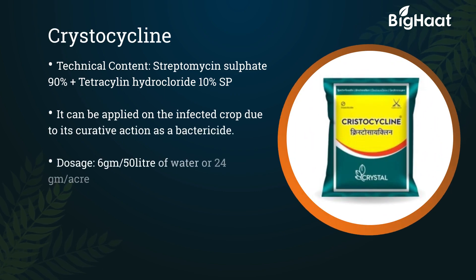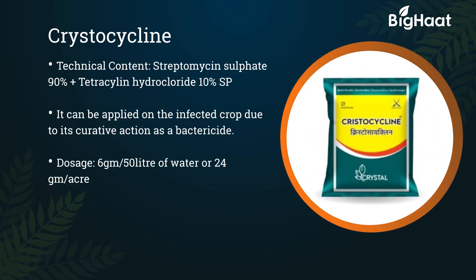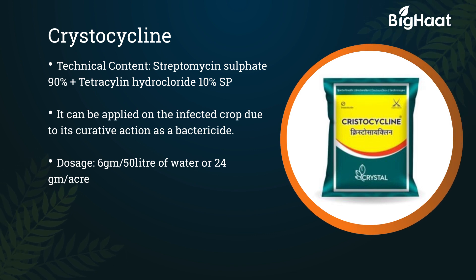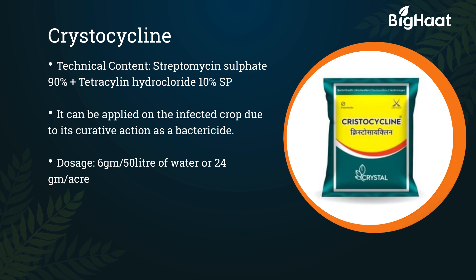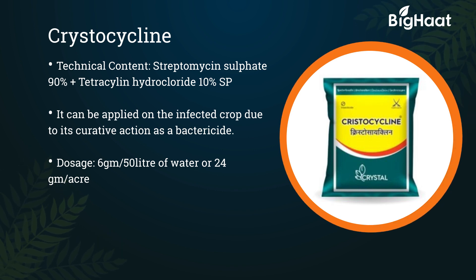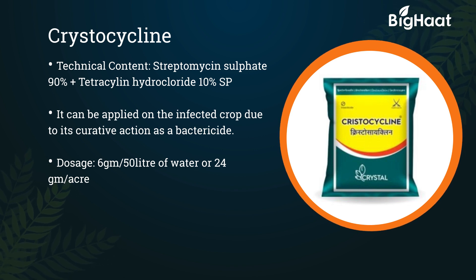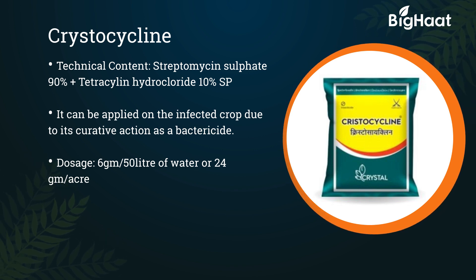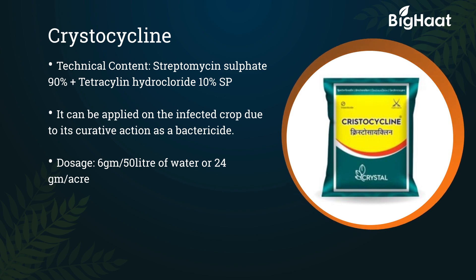Ristocycline: Its technical content is streptomycin sulphate 90% plus tetracycline hydrochloride 10% SP. It can be applied on the infected crop due to its curative action as a bactericide. Its dosage is 6 grams per 50 litres of water, or 24 grams per acre.